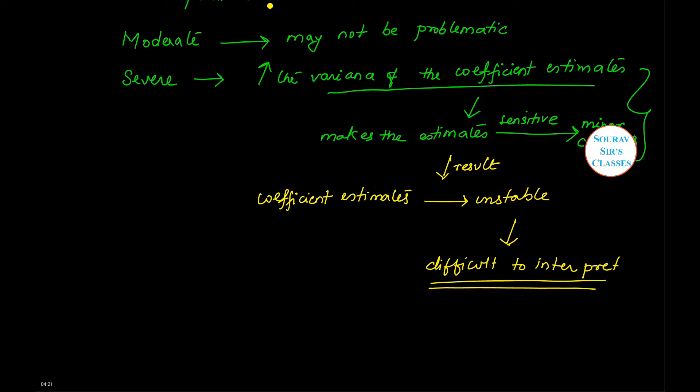So if interpretation is not possible, then the model itself will not work, it will not hold good. This is why multicollinearity is considered to be a problem. Now if it is such a big problem, then how can we detect it? So let's answer the next part. The next part of the question asked was how you can detect it, how you can say that there is multicollinearity for a general model.